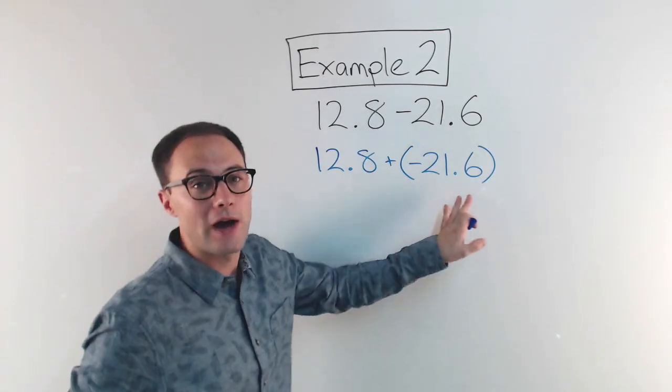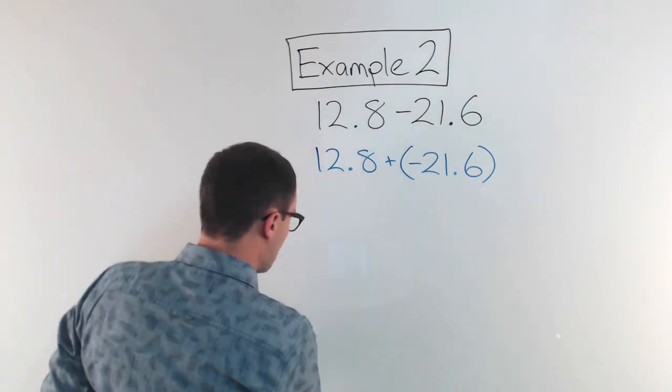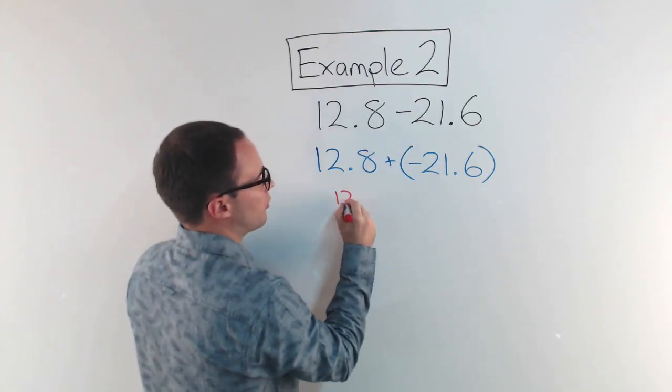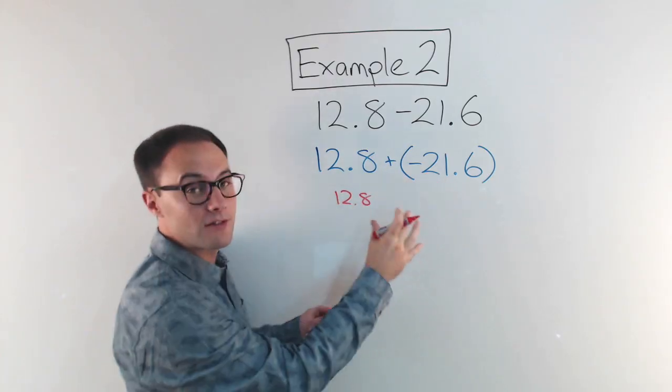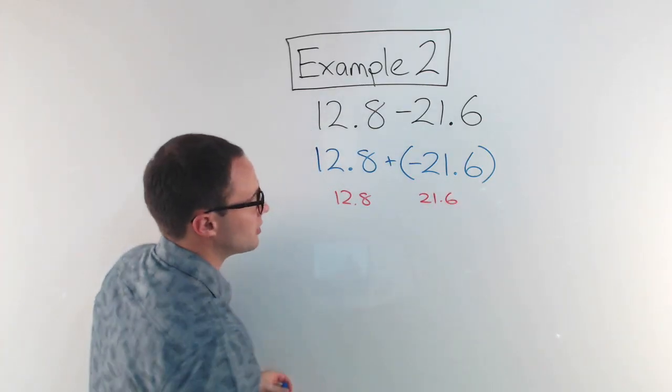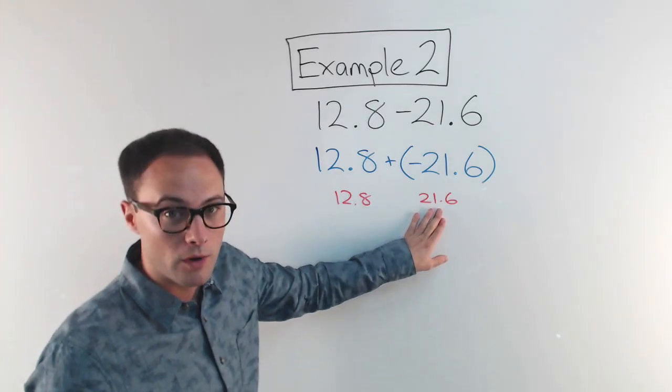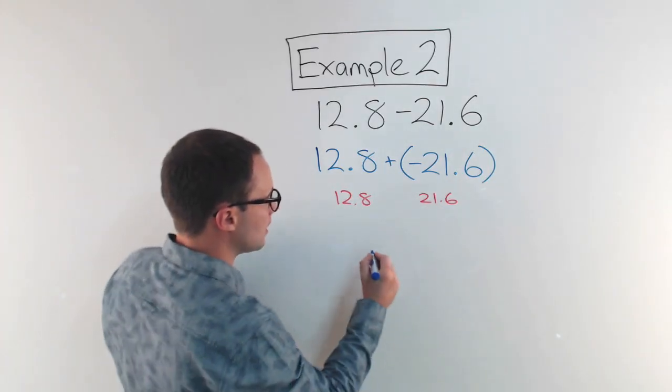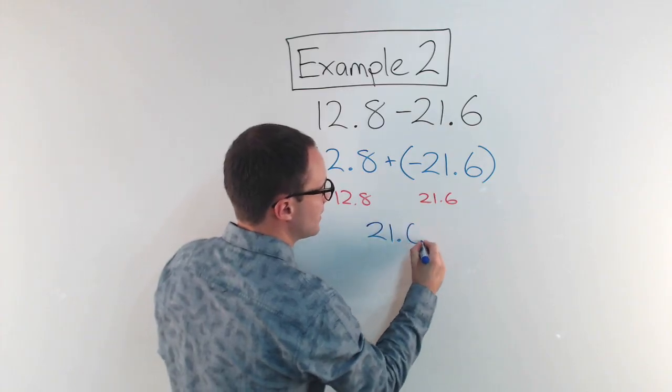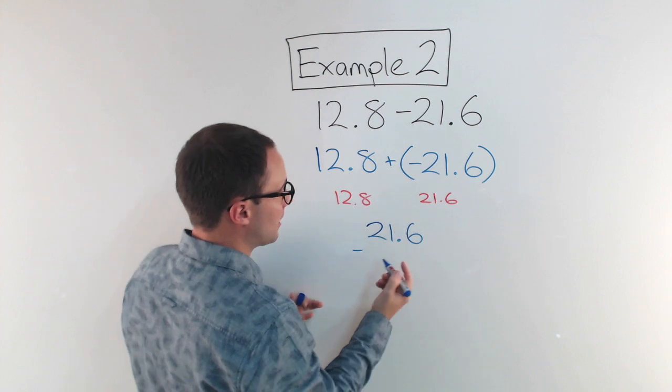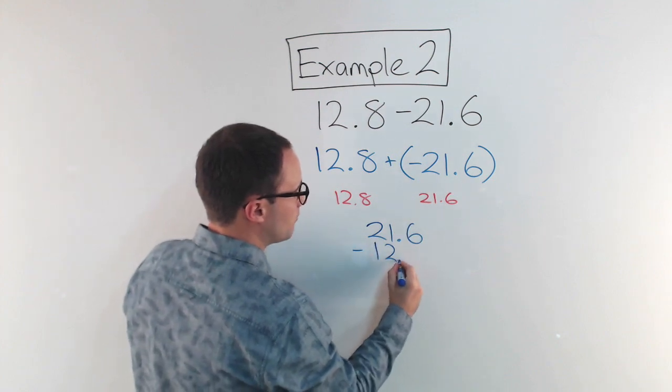So I'm going to take the absolute value of these. The absolute value of 12.8 is just 12.8. Absolute value of negative 21.6 is 21.6, which means I'm going to subtract the greater number 21.6 minus 12.8. I'm lining the decimals up again.